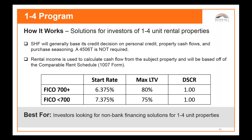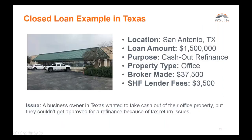Finally, the one-to-four program — what we call the Plex Program — covers one to four unit residential investment properties. These must be closed in a business entity name. It's a very popular investment for real estate investors looking at commercial property — a lot of folks are buying duplexes and triplexes, fixing them up, and holding them for long-term rentals. Our debt service coverage is down to 1.0 on these, so we're very aggressive, and a lot of our brokers who see small balance commercial loans also see these properties.